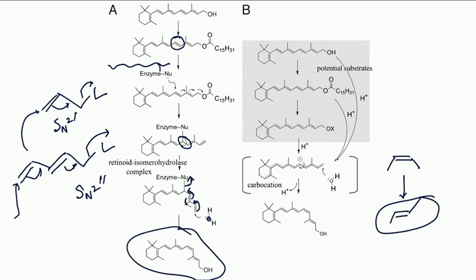An alternative mechanism proceeds through a very stable allylic carbocation, which has many resonating structures including one with no double bond at position 11. Rotation to the cis configuration occurs at that stage, and then water attacks the terminal carbon. These are the two proposed mechanisms for the conversion of all-trans retinol to 11-cis retinol.